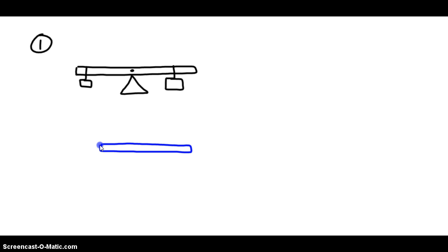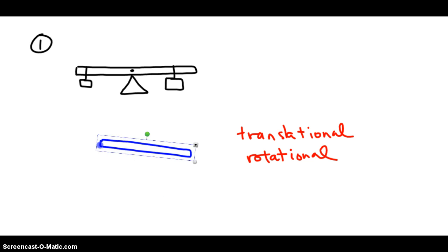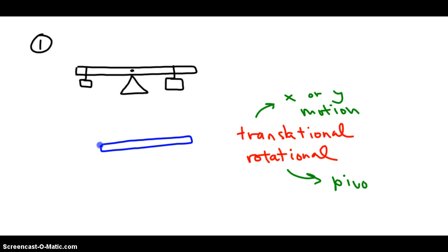There are two different ways an object can move. It can have translational motion and also rotational motion. Rotational is easy. If we have a seesaw, it can rotate. But what's translation? Translational motion simply describes everything else we've considered up to this point. Translational motion means it can go left or right, up or down, it can move along the x or y axis, whereas rotational is moving about a pivot point.